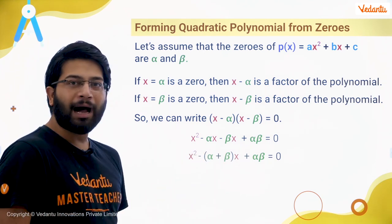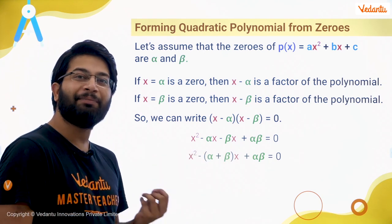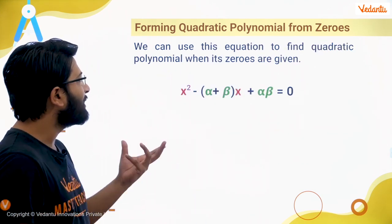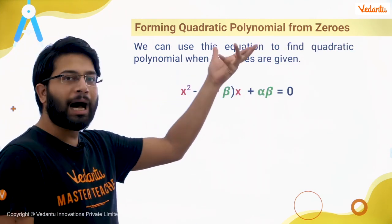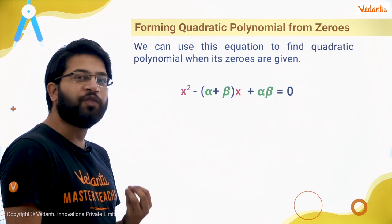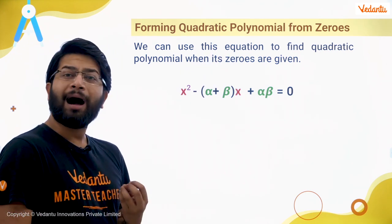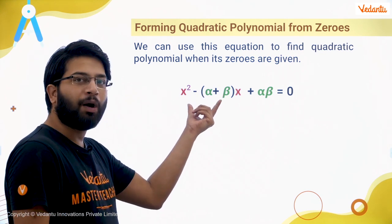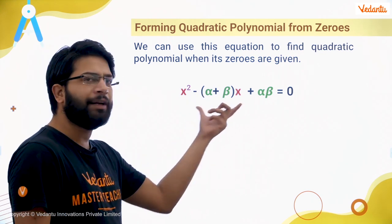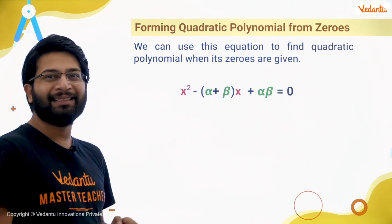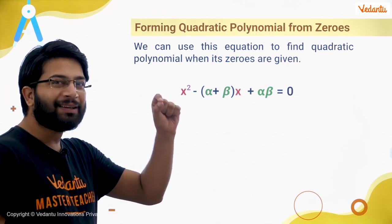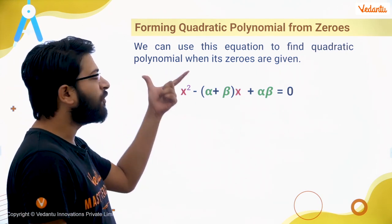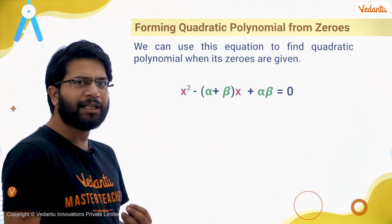Alpha and beta are nothing but the zeros of the quadratic polynomial. So if the zeros are given and I have to find the quadratic polynomial, it's very simple — just put the values of alpha and beta into this equation and you will get the quadratic polynomial which has those zeros. I hope that is clear.